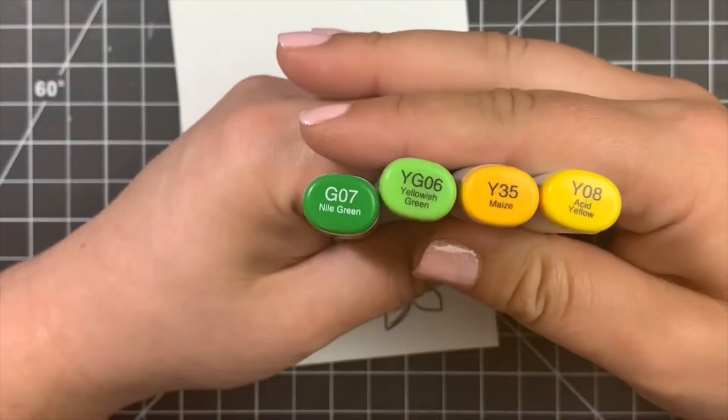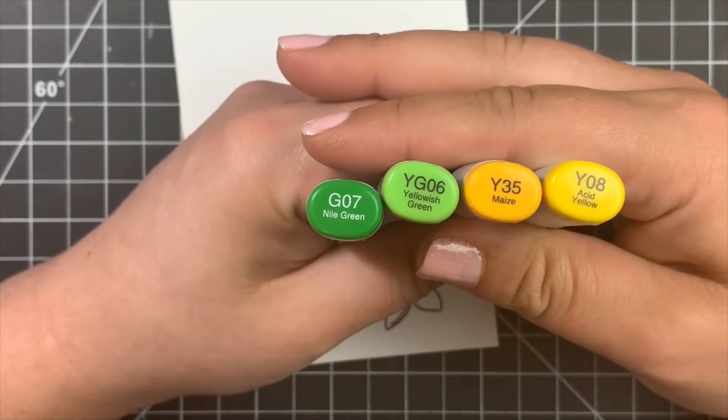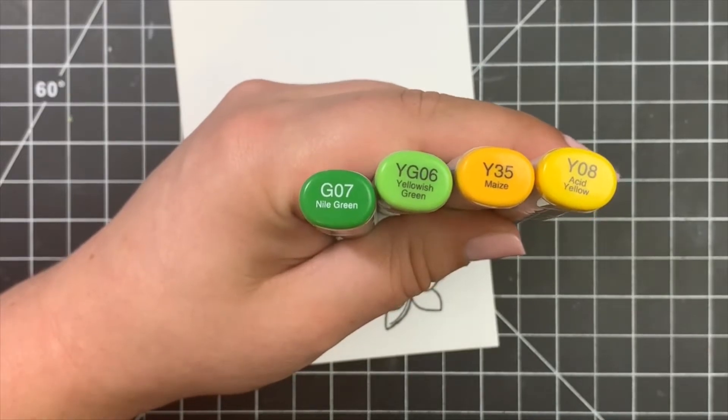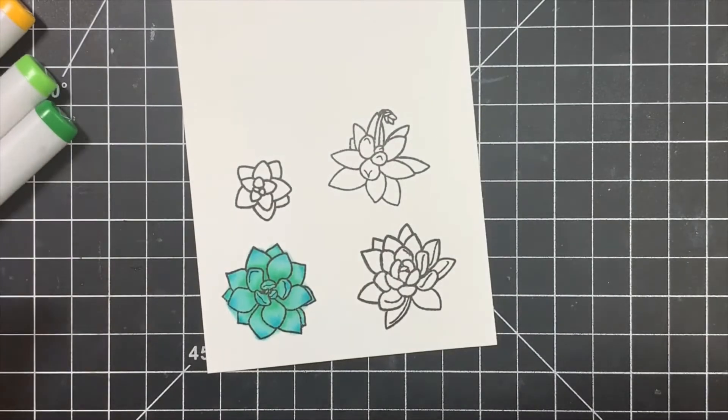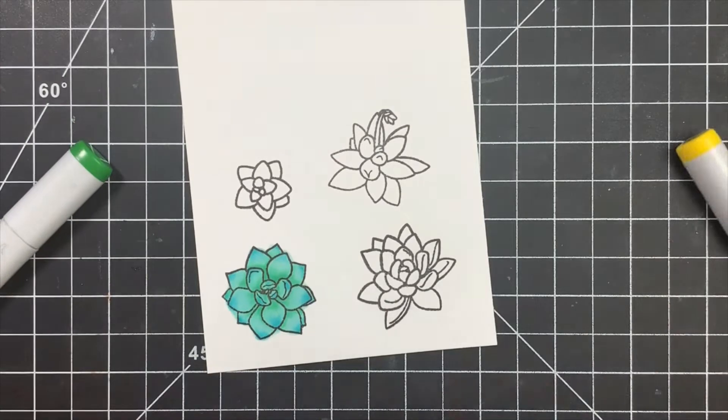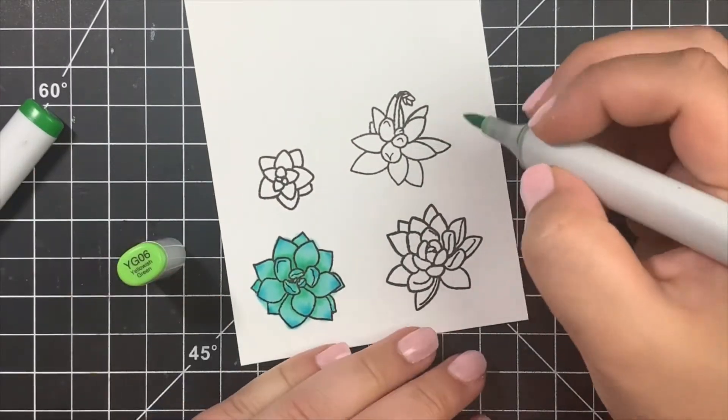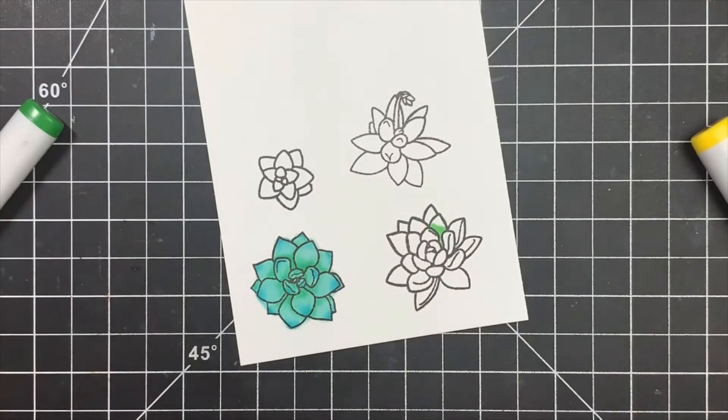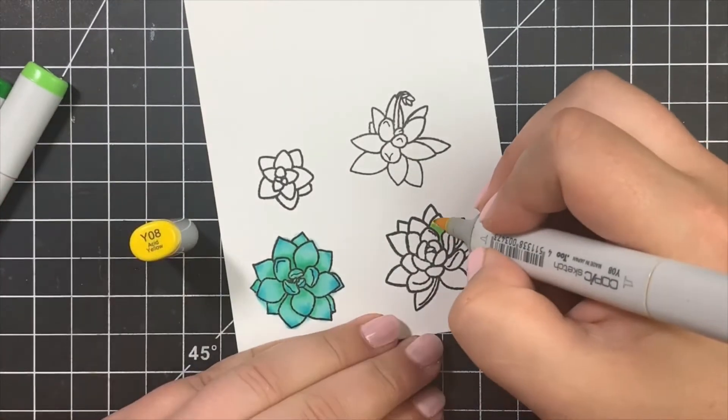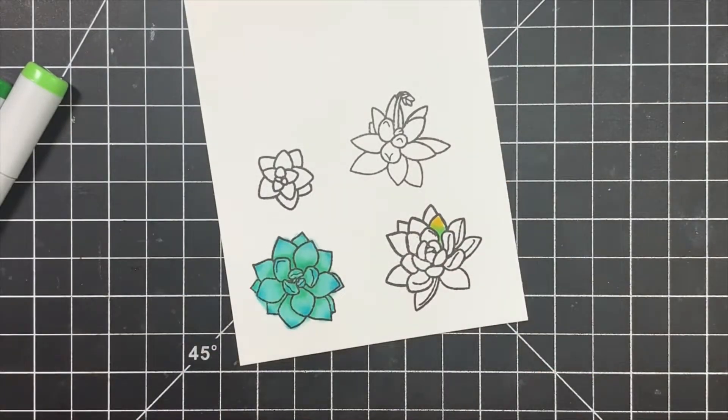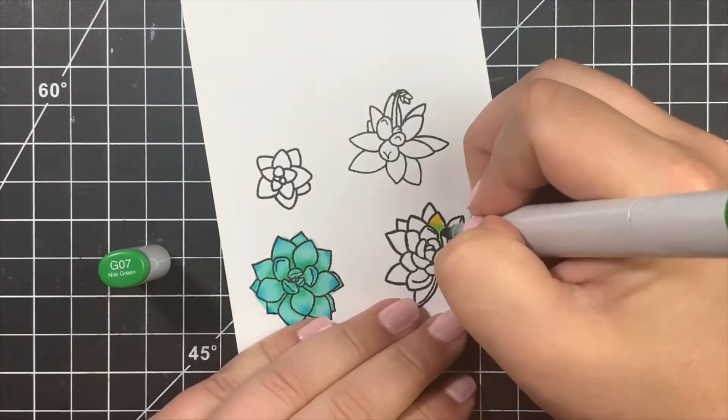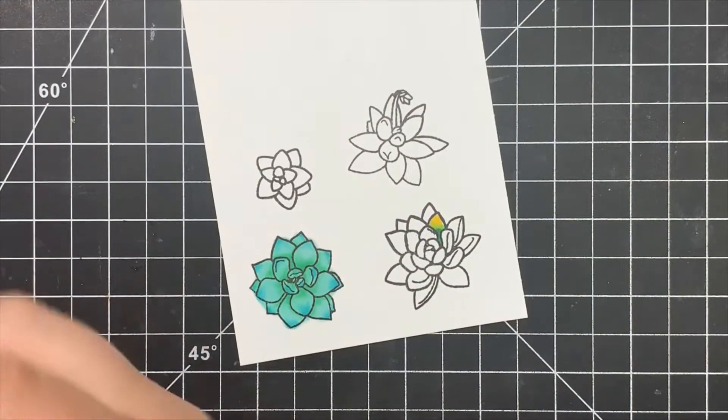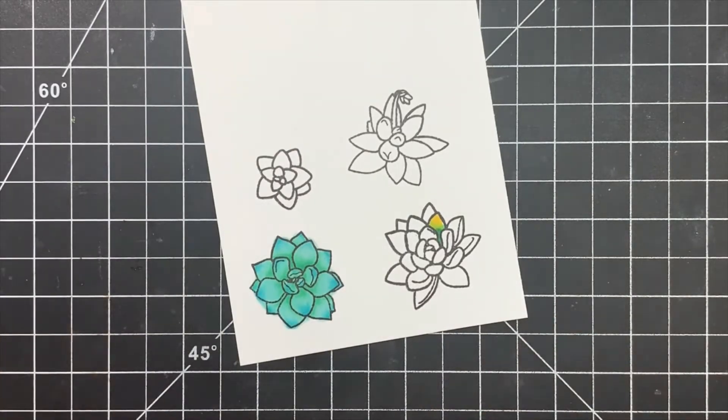We're going to move on to the next one. This time we're going to be using some Gs, YGs, and Ys. You can see that will progress from the greens, the yellow greens, and then the yellows. Those last numbers are either the same or maybe one off, and you should get a good blend. I'm going to start with my lightest colors, using the YG06 on the bottom and the Y08 on the top. Then I'll add in my shadows, the G07 on the base and then the Y35 for the very tip.